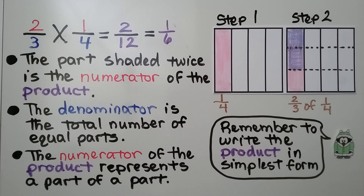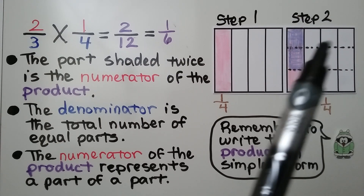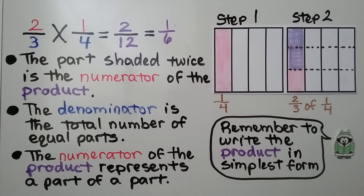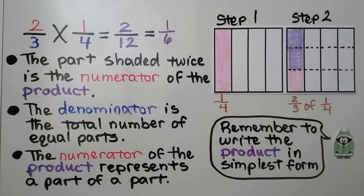The denominator is the total number of equal parts — it's now split into twelve parts, so our denominator is twelve. The numerator of the product represents a part of a part.